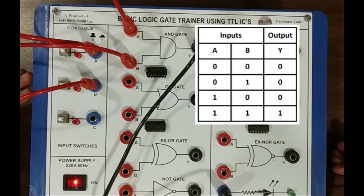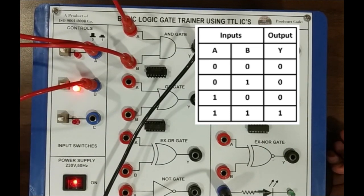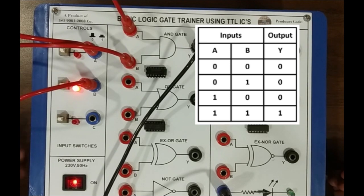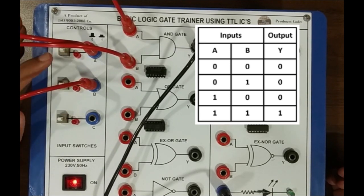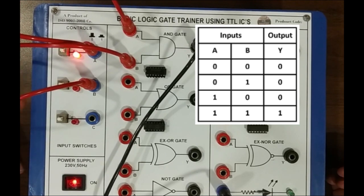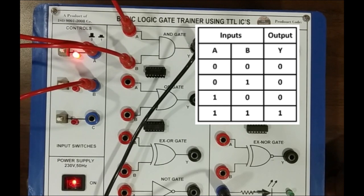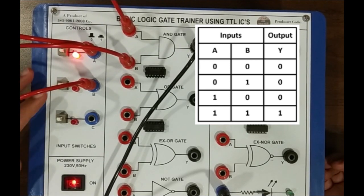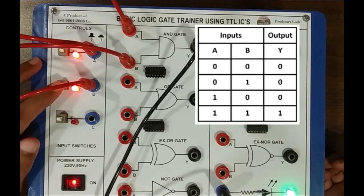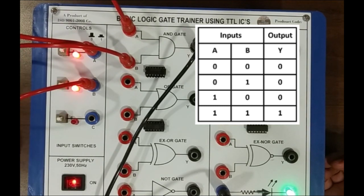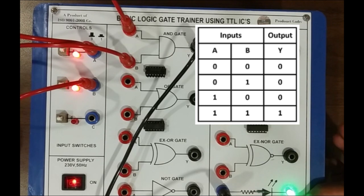Suppose we take zero, one — so A is zero and B is one — output is zero. Then another condition: one, zero — A input is one, B input is zero — so output is again zero. The fourth condition is one, one — if we give both inputs high simultaneously, then we can have output at high condition.